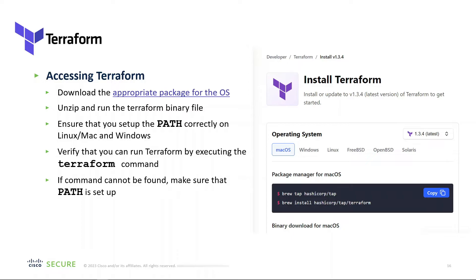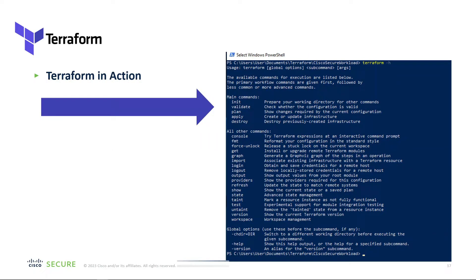To get started, go to Terraform, download the appropriate package for your operating system, unzip the Terraform binary file, and make sure your paths are set up correctly. The main commands are: init — prepare your working directory for other commands; validate — check whether the configuration is valid; plan — show the changes required by the current configuration; apply — actually update the infrastructure; and destroy — revert anything you have deployed. Terraform keeps track of all changes needed and the order in which they need to be deployed.